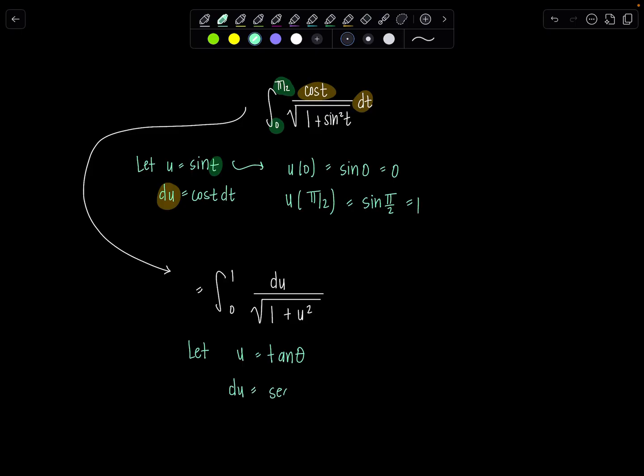So du is secant squared theta d theta and then here's the important part again. We need to change our limits of integration. Currently they're in terms of the variable of the integral which is u. So when you switch them for trig sub, you're going to substitute them in for u, not theta. You're going to solve for what they are in terms of theta.